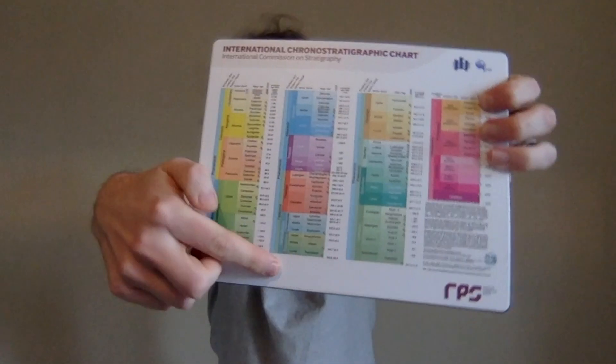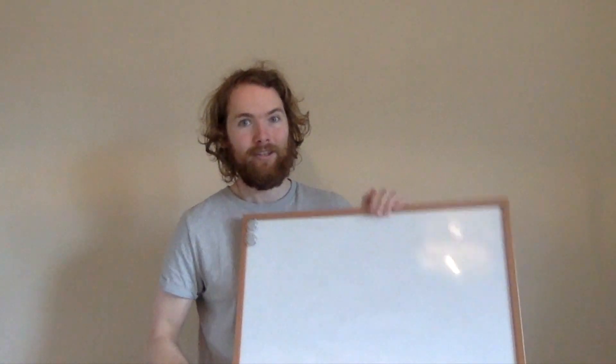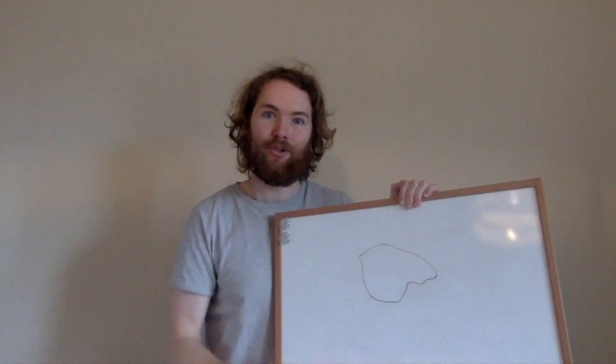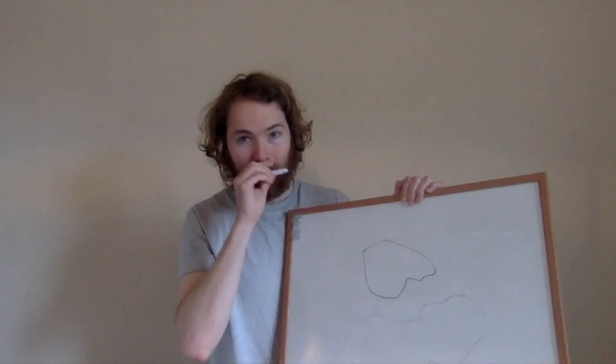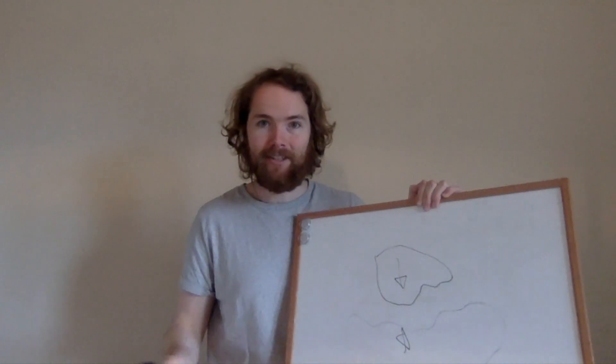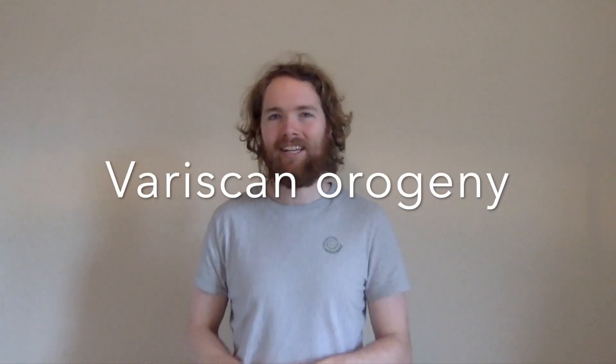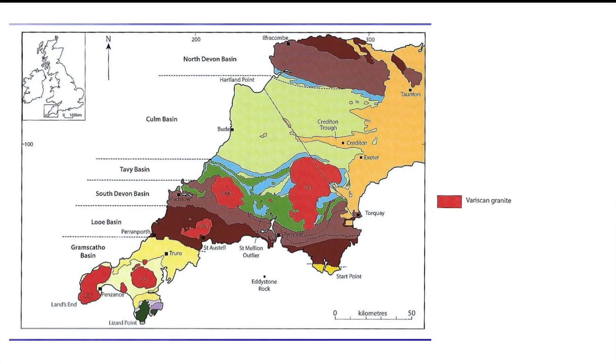The second event happens from where we got to last time and continues up until the Permian. Now we have Euro-Americas — with Avalonia and Baltica joined onto Laurentia — and we have Gondwana, and basically we're talking about them colliding with each other. This is called the Variscan Orogeny. Some of the mountains formed from this include those of Portugal and around the Cornwall area, and we now see massive granites in the ground that would have formed beneath that mountain range as a result.